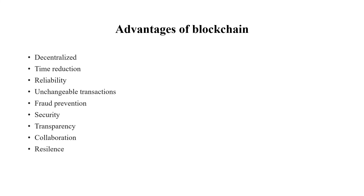Seventh is collaboration — it allows all parties in the network to take decisions and participate in mining. All participants are involved in decision-making, making it more collaborative than a traditional system with no central authority. Eighth is resilience — blockchain has a replicated architecture, so the chain is still operated by most nodes even in the event of a massive attack and it doesn't bring down the entire system. These are some of the advantages of blockchain.